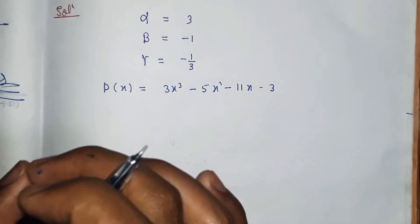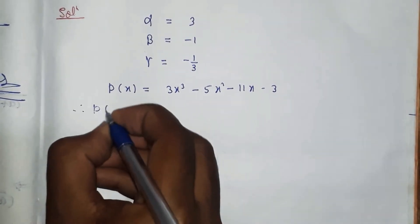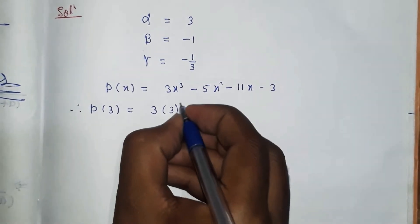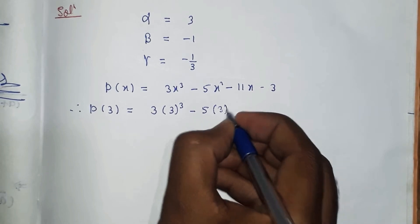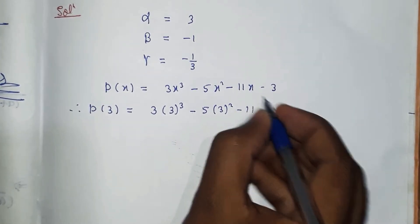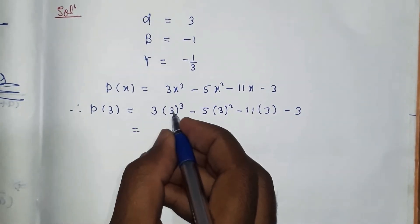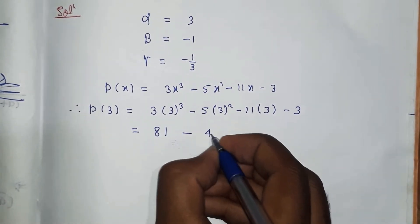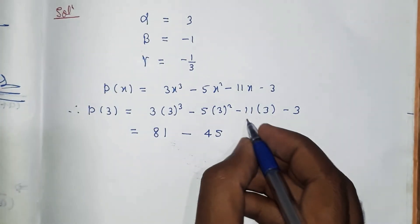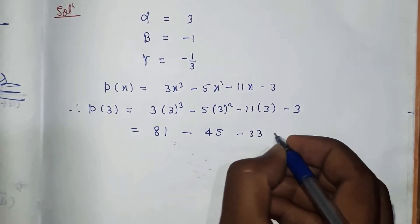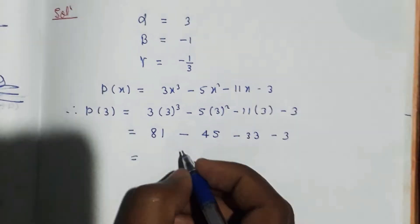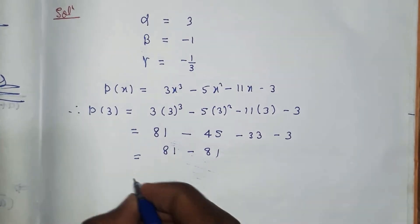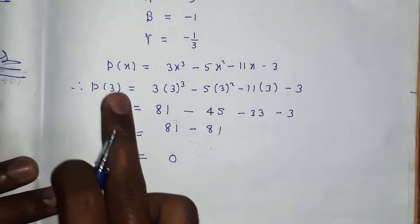Therefore, p(3) = 3×(3)³ - 5×(3)² - 11×3 - 3. Solving: 3×27 - 5×9 - 33 - 3 = 81 - 45 - 33 - 3 = 0. This equals 0.